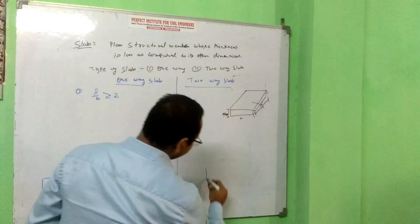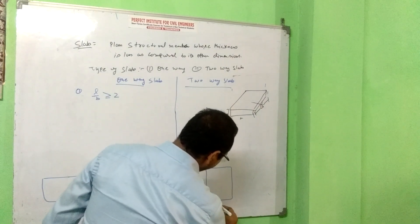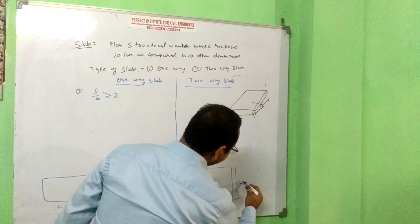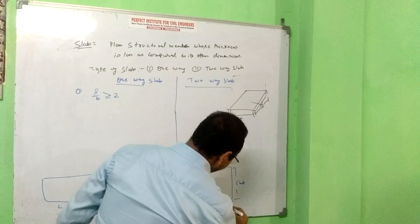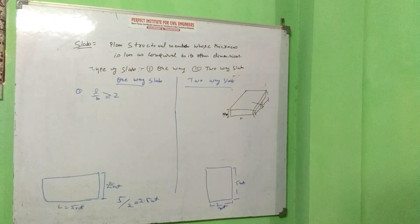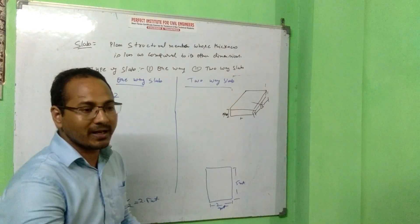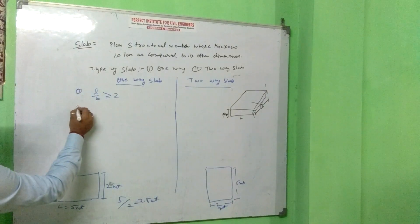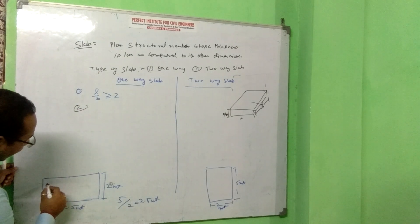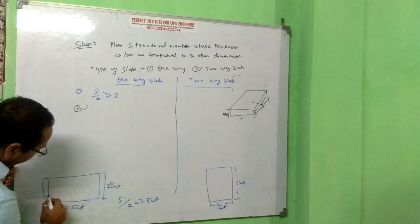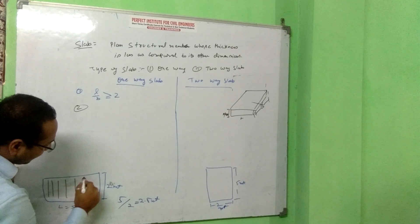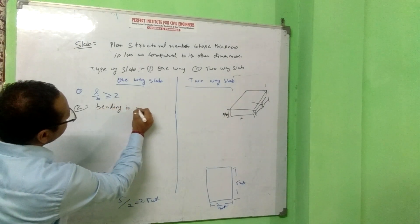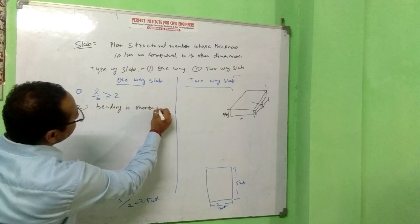One-way slab means this is one-way slab, right? Two divided by 5, the result will be less than 2, this is two-way slab. Second, bending. Bending will be in steel reinforcement, that is bending in shorter span.